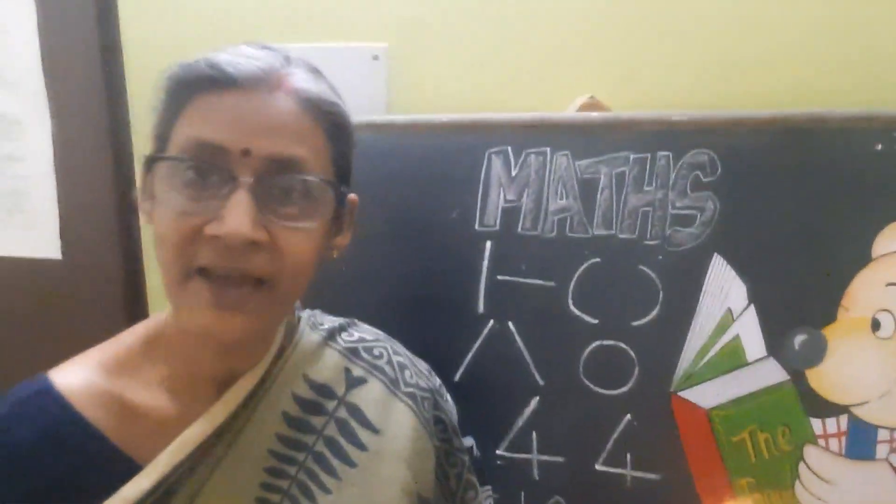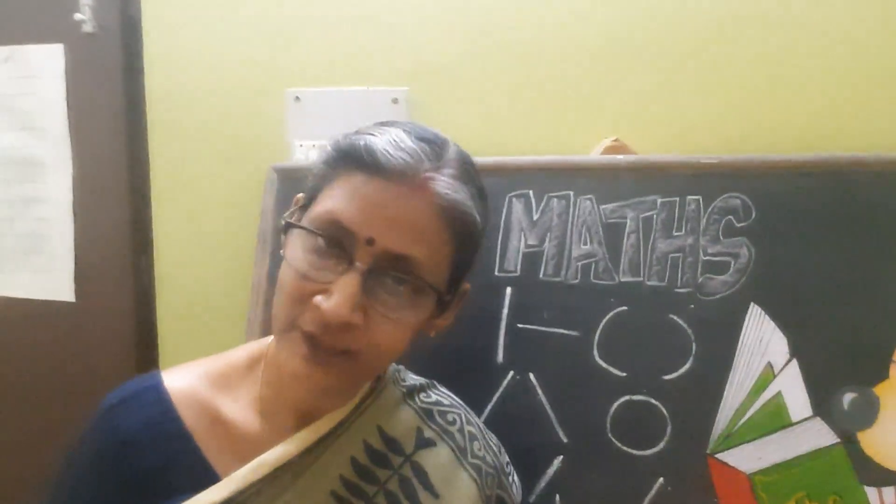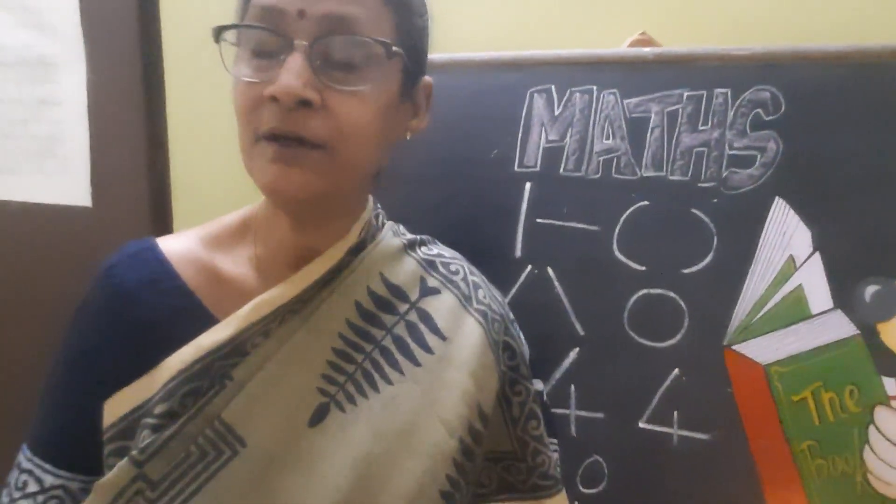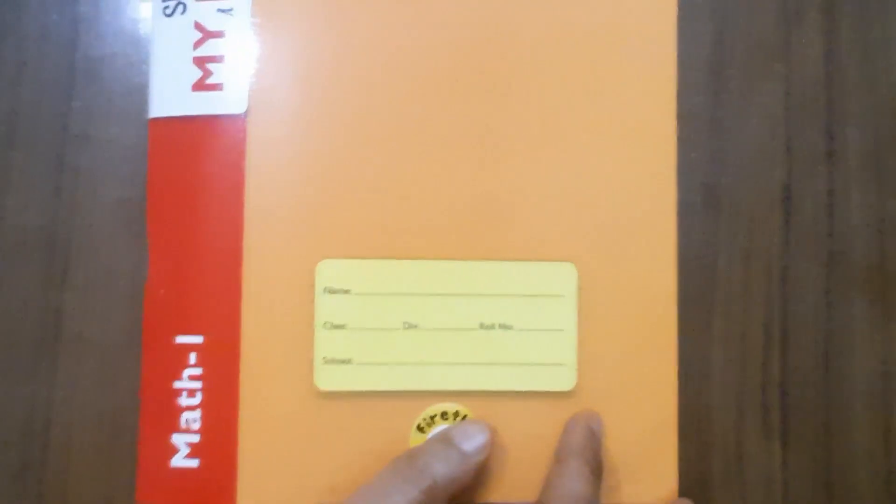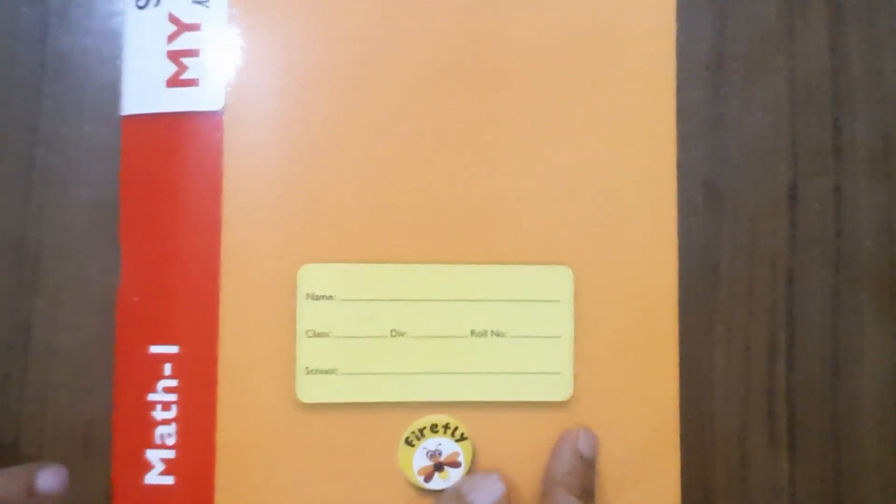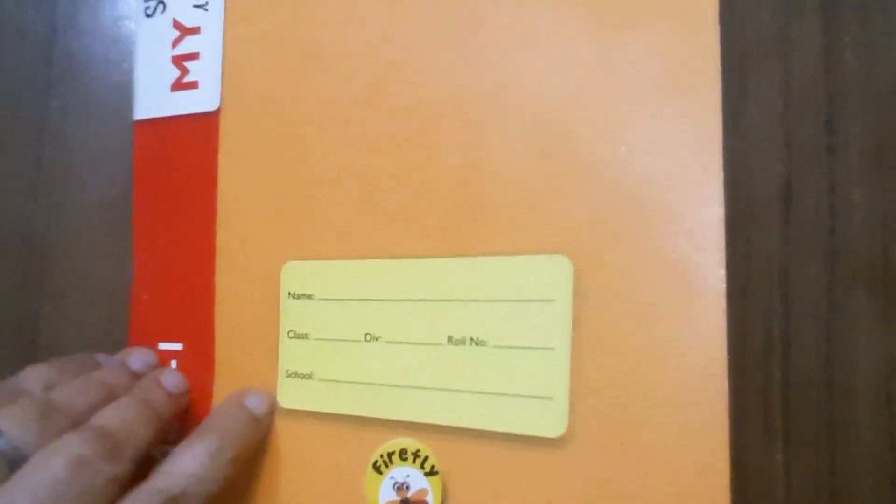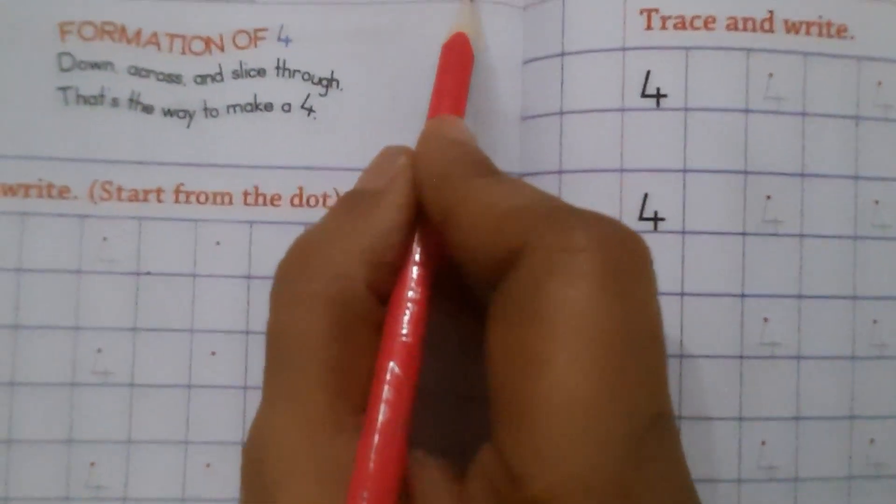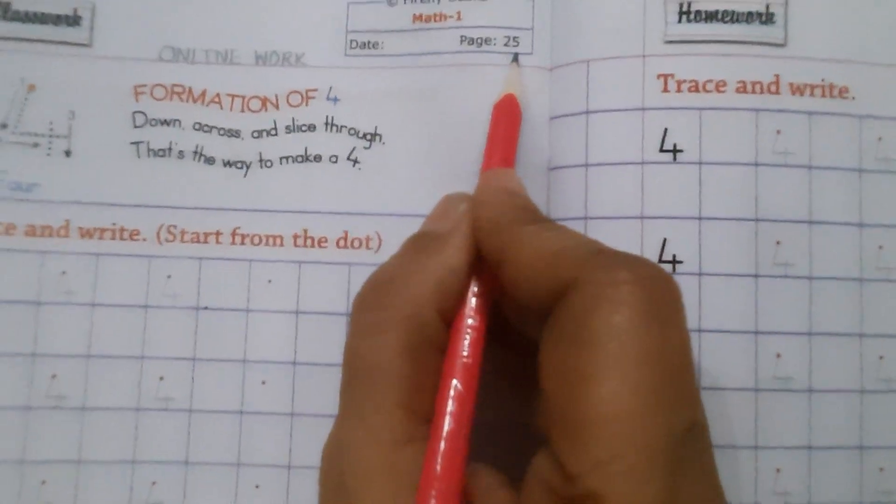So children, I think all of you understood how to write number 4. Now take out your My Skill Book Maths 1 and open page number 25.